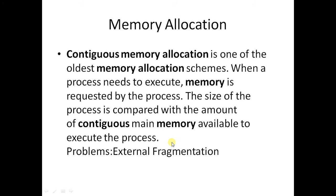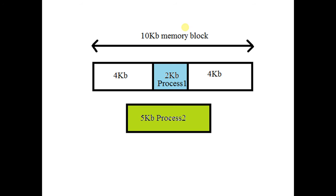There is a problem with contiguous memory allocation known as external fragmentation. For example, suppose this is a 10 KB main memory block and there is an incoming 5 KB process. Here, 2 KB is already occupied by process 1, and 4 KB is free on each side — so total 8 KB memory space is available.